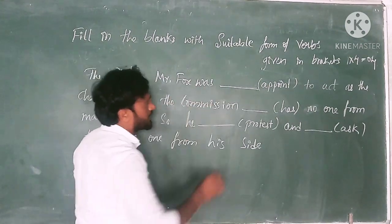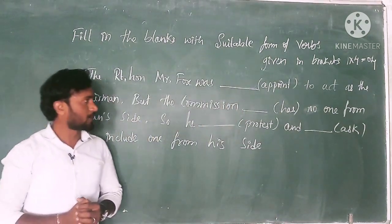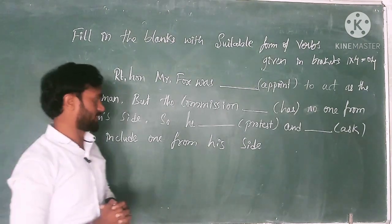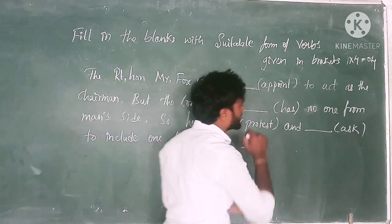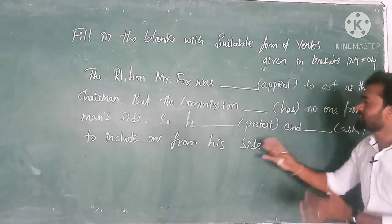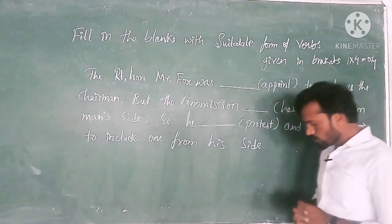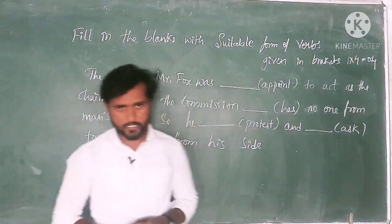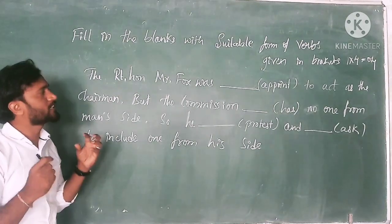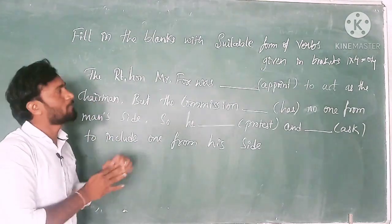...was dash appointed to act as the chairman, but the commission dash has no one from man's side. So he protests and asks to include one from his side. How can we get full marks out of this question? Suitable form of the words.